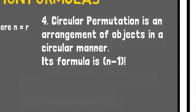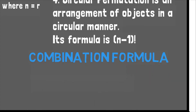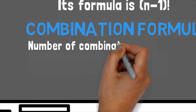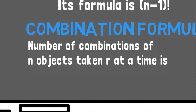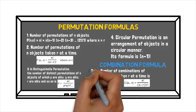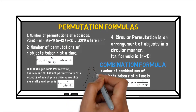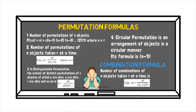Let us now proceed with the combination formula. The number of combinations of n objects taken r at a time is given by n factorial divided by (n minus r) factorial times r factorial. These are the formulas we are going to use when solving problems involving permutations and combinations.